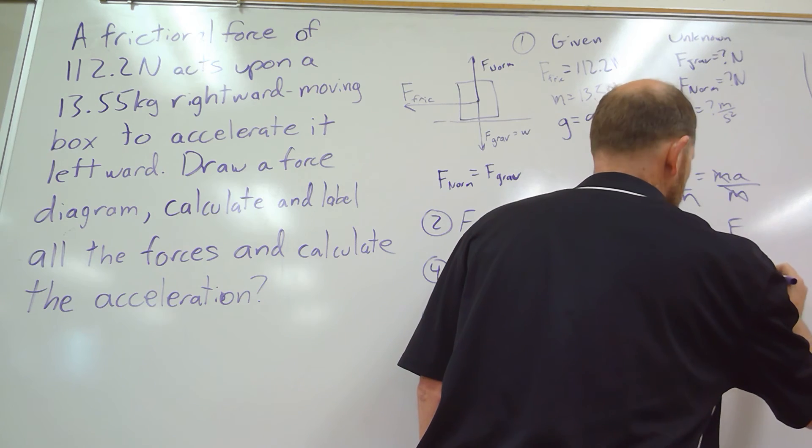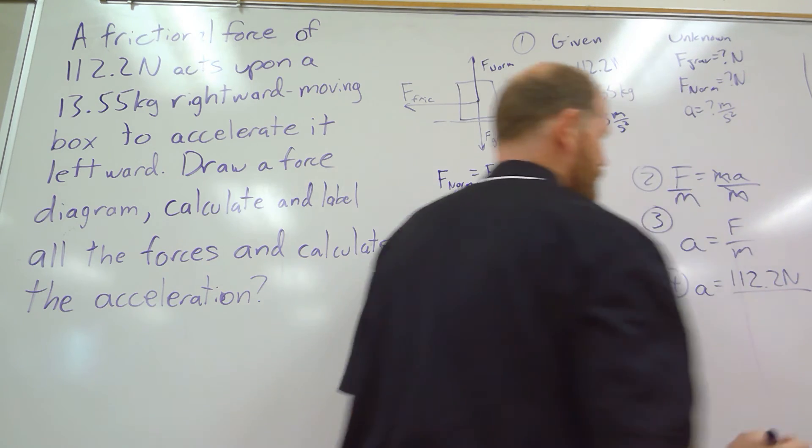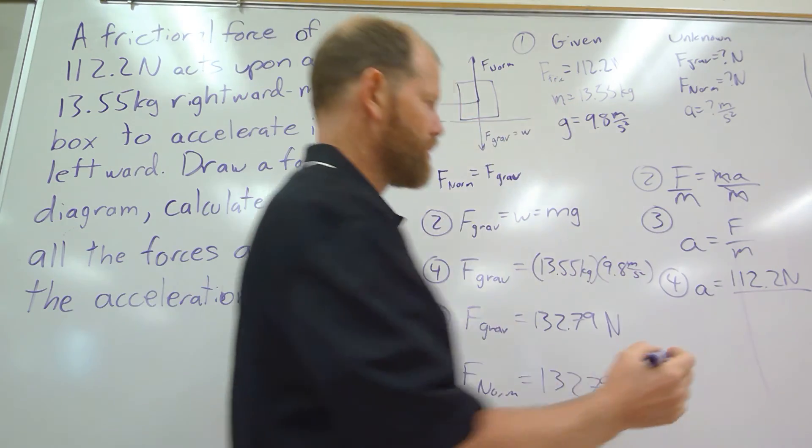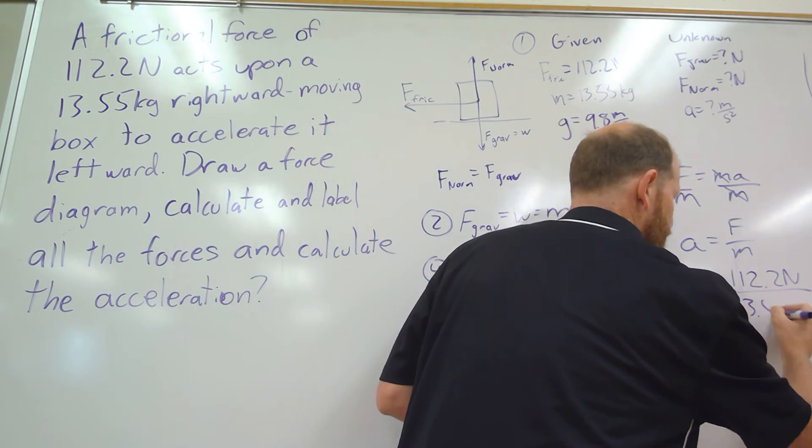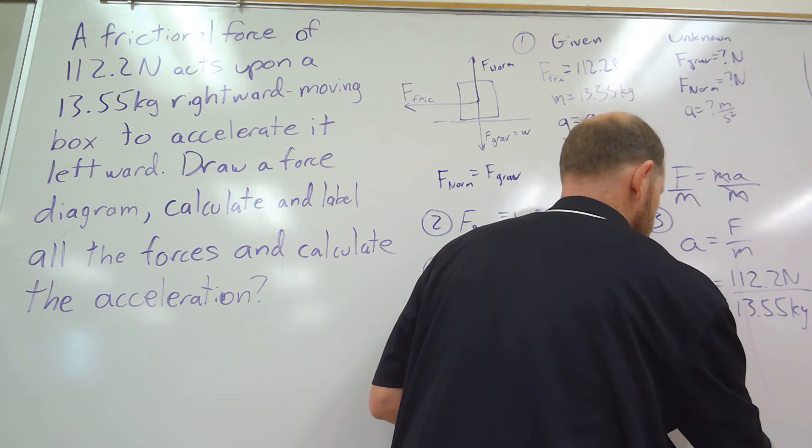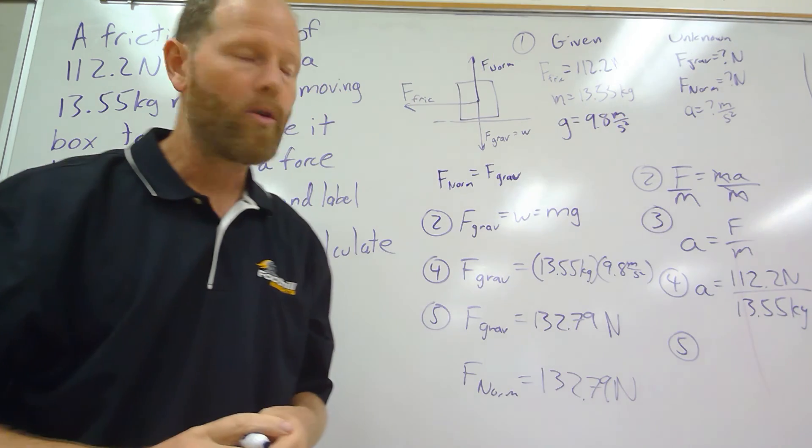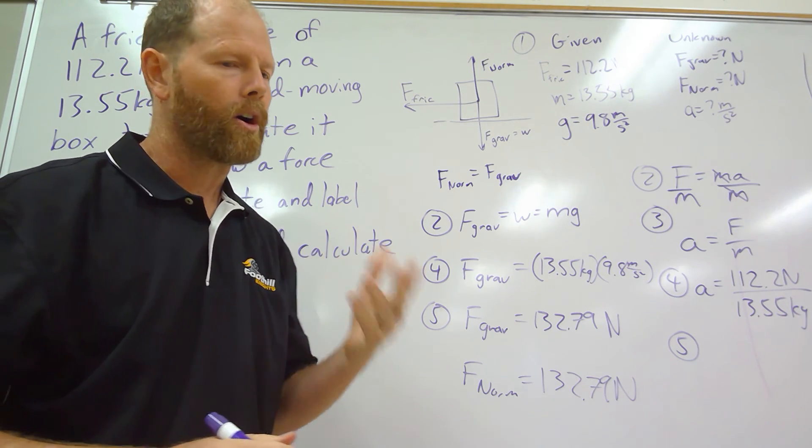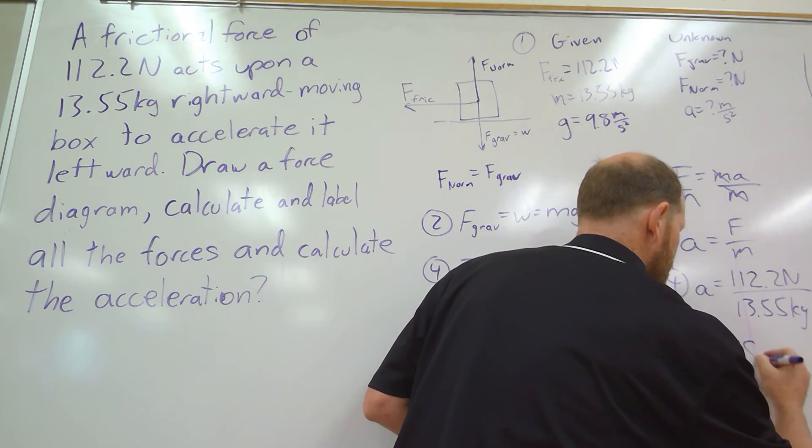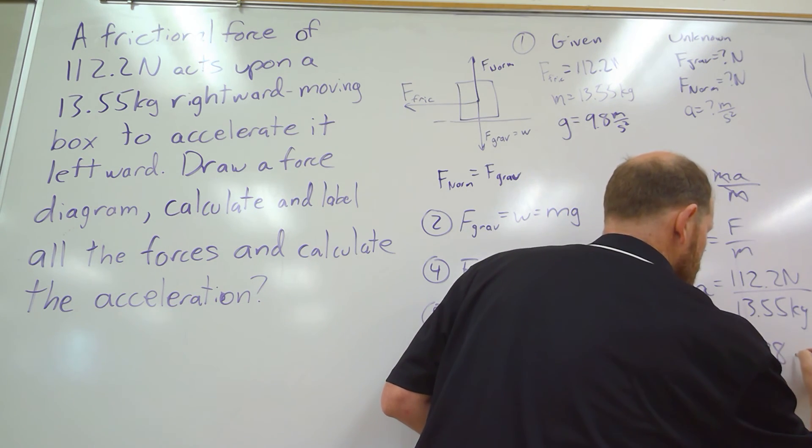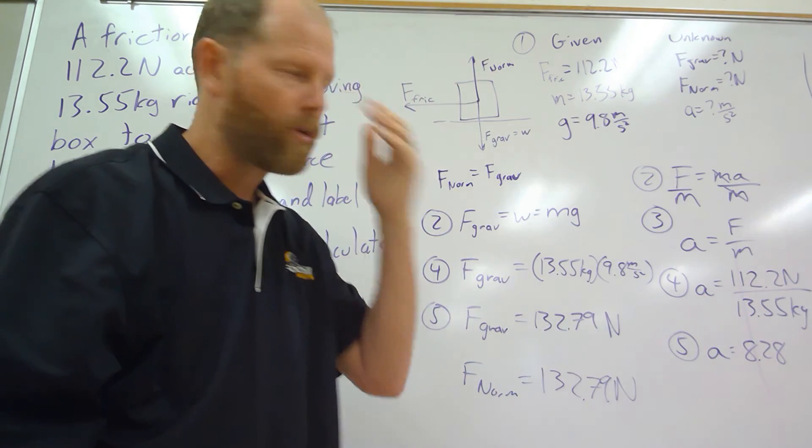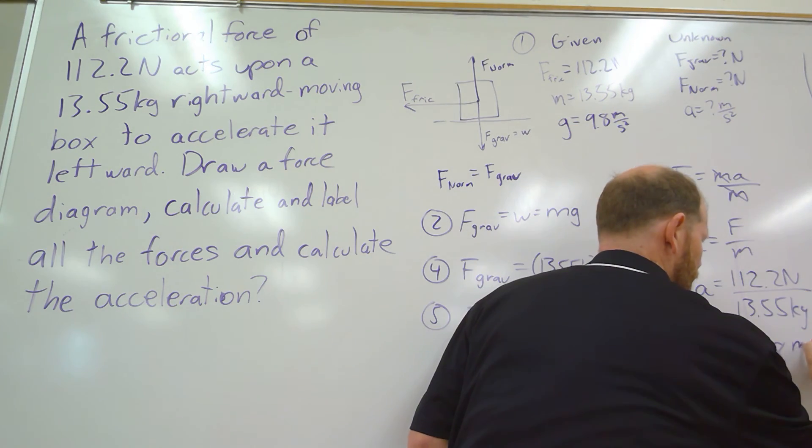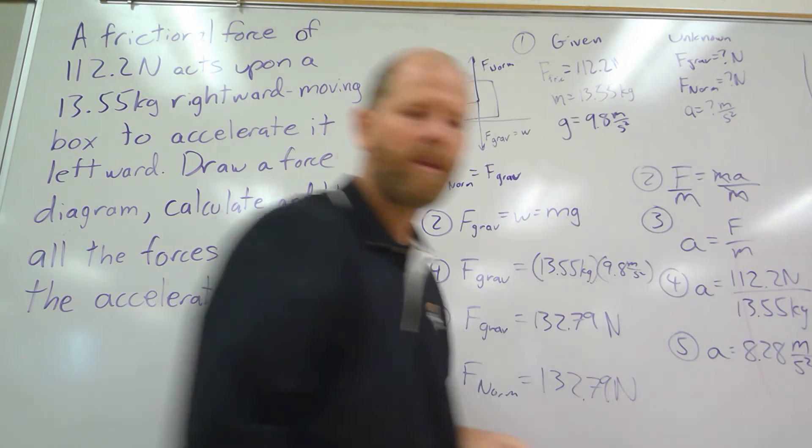m is 13.55 kilograms, and so then we move on to step five, which is to calculate. We plug that into our calculator and we get 8.28. Then newtons divided by kilograms—remember, newtons are a kilogram meter per second squared. The kilograms cancel and that leaves us with meters per second squared.